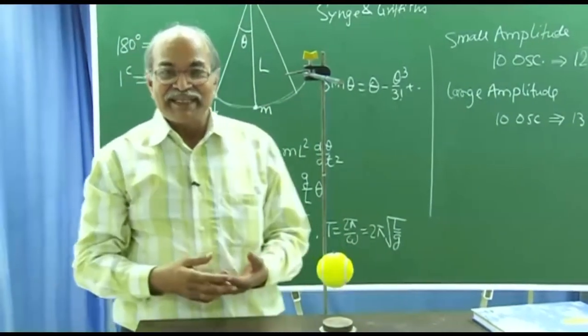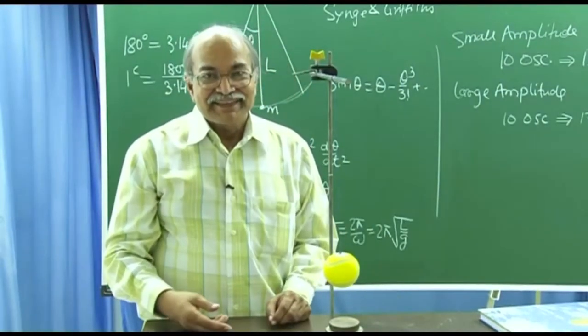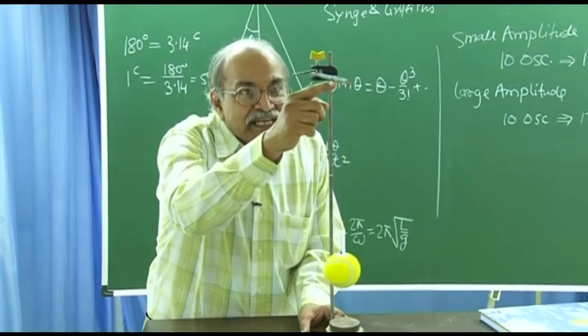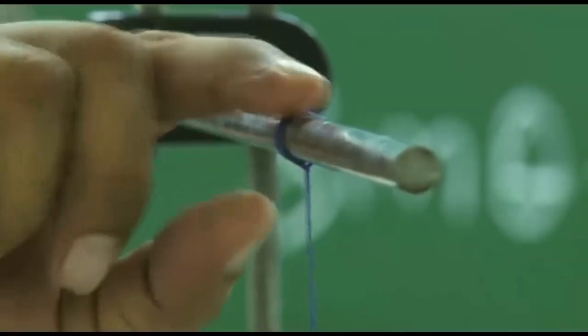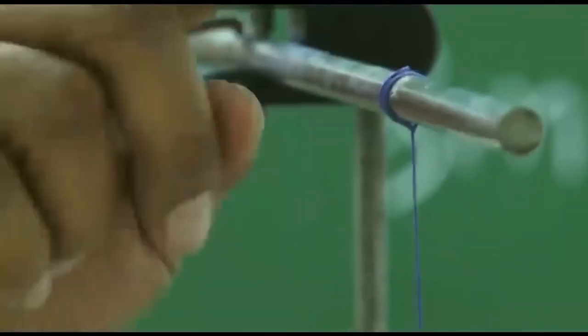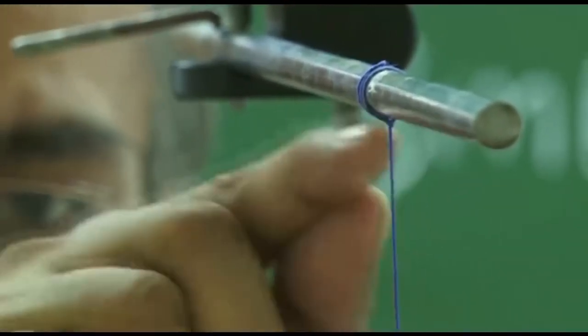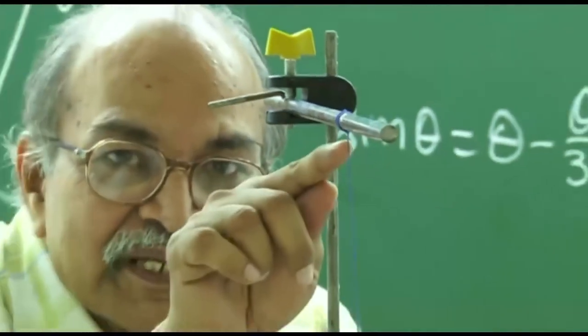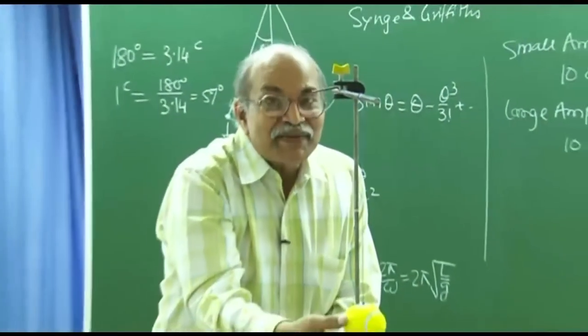And that is coming in by this knot that we have put here. It's not a point contact as such. This point is really not fixed. What we have done? We have wrapped this thread 3-4 times and then put a knot here. And at the knot there is some structure, some triangular structure. And when this oscillates, that triangular structure gets deformed. And from there, extra forces come and that changes the plane of motion.